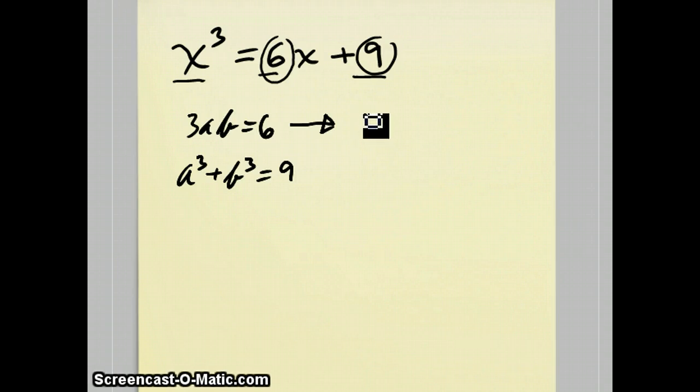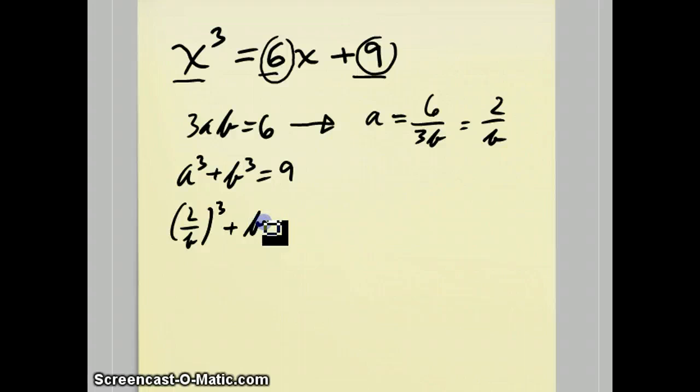I'll solve for a in terms of b. So if I divide both sides of this equation by b over 3, I get 6 over 3b, which reduces to 2 over b. Now when I plug 2 over b in for a, I get this, which becomes 8 over b cubed plus b cubed equals 9.